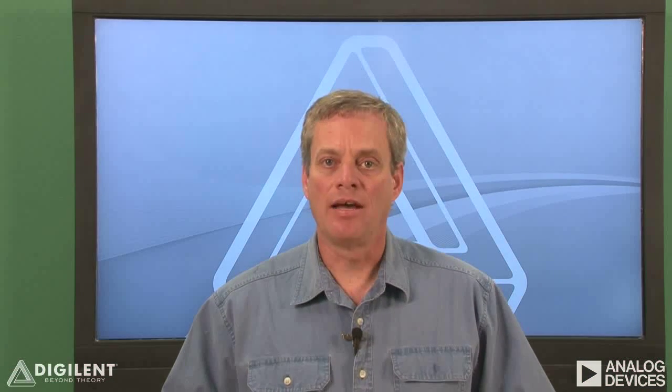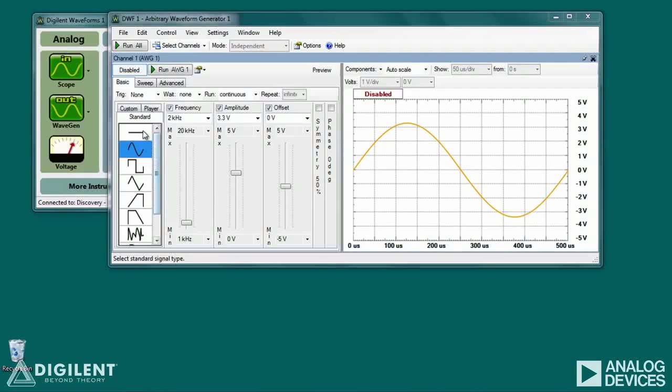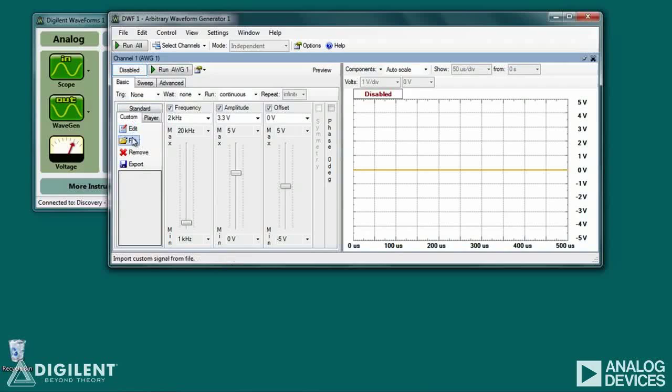Next, we'll talk about the Custom tab. The Custom tab allows you to create signals according to your own specifications. The primary options under the Custom tab allow you to create signals using the Edit option, import a waveform from a file using the File option, delete a waveform from the list of currently available waveforms using the Remove option, or save a waveform to a file using the Export option.